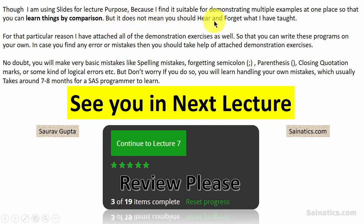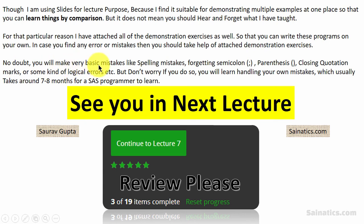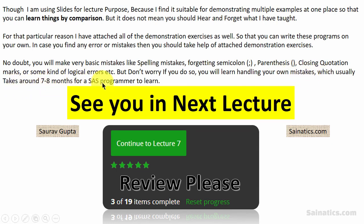But it does not mean you should just listen and forget what I have taught. For that reason I have attached all of the demonstration exercises so that you can write these programs on your own. In case you find any errors or mistakes, take help from the attached demonstration exercises. You will likely make basic mistakes like spelling mistakes, forgetting a semicolon, parenthesis, closing quotation marks, or some logical errors — but don't worry, handling your own mistakes is something that usually takes around 7 to 8 months for a SAS programmer to learn.